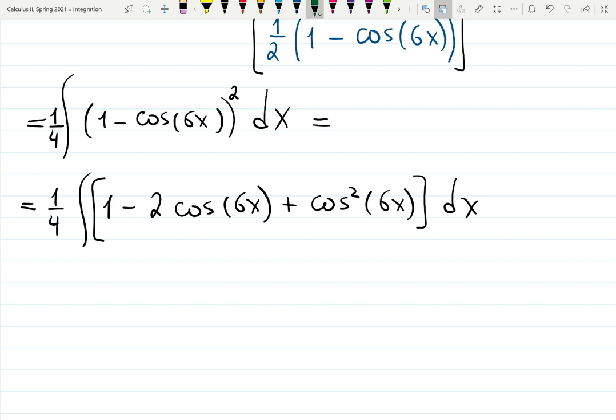Now which parts we know how to integrate? Integral of one we know, integral of cosine we know, even though we will need to use some u substitution over here, calling 6x u. But the last one is not very clear, and that's where the third half angle formula steps in.